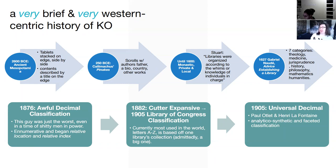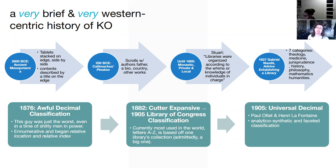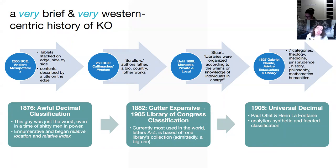A very brief and very western-centric history of knowledge organization begins in ancient Mesopotamia with tablets stacked on edge, side by side. These containers had a little tile up front — one side of the tablet would describe what the book, or tablet, was about.